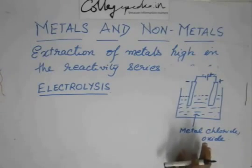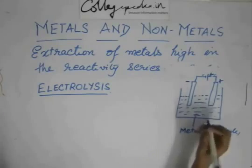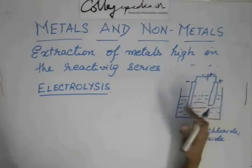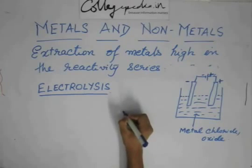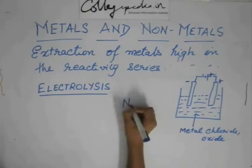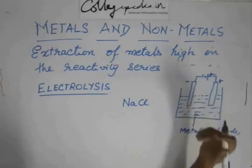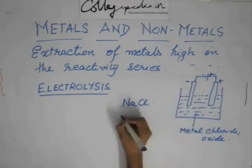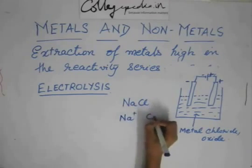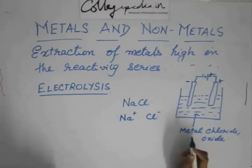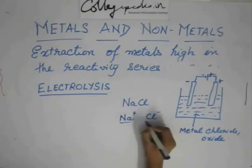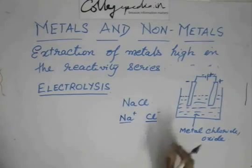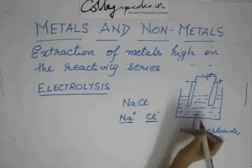So what happens is that in liquid form, the ionic salt will dissociate into ions. Like if we have sodium chloride, in the molten form it will form Na+ and Cl- ions. This is the molten form, not the solid form and not the aqueous form. So we have Na+ and Cl- independently existing in the solution.